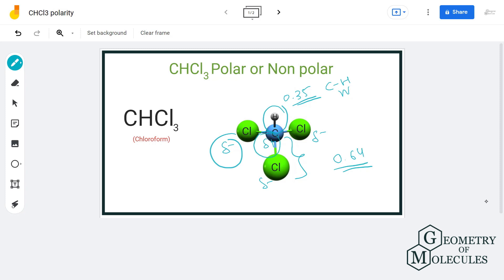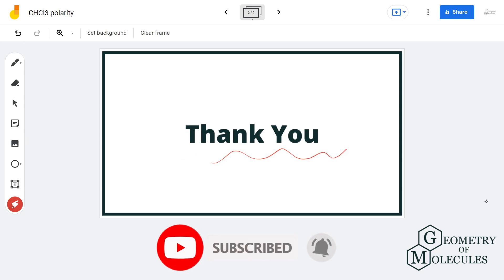Thus chlorine will have partial negative charge and carbon here will have partial positive charge. Based on all the points that we discussed, we can say that CHCl3 is a polar molecule.